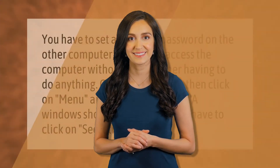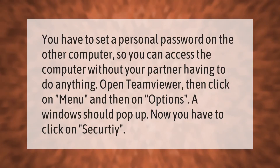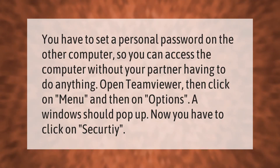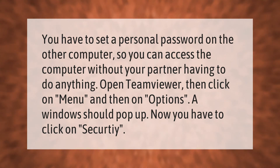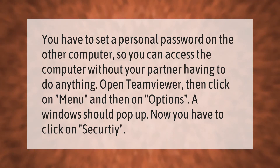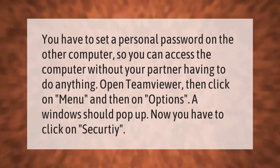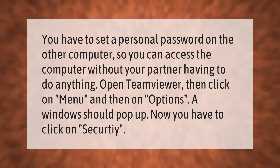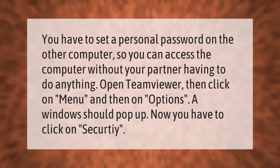You have to set a personal password on the other computer so you can access it without your partner having to do anything. Open TeamViewer, then click on Menu and then on Options. A window should pop up — you then have to click on Security.